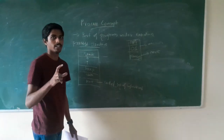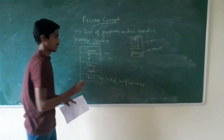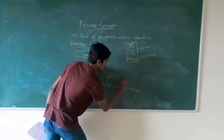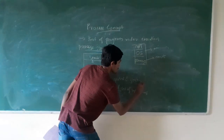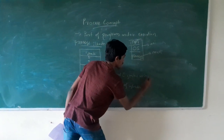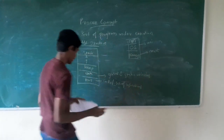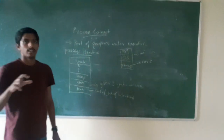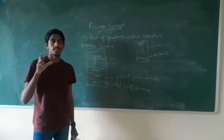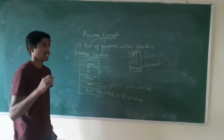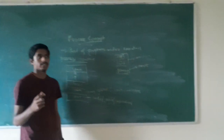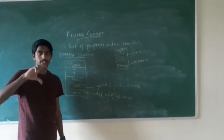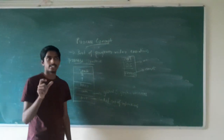The data section contains all the global variables and static variables. Next is the heap section. The heap section contains dynamically allocated memory variables. Suppose the program has dynamic variables — variables whose memory is not completely defined at compile time. For example, consider an array.